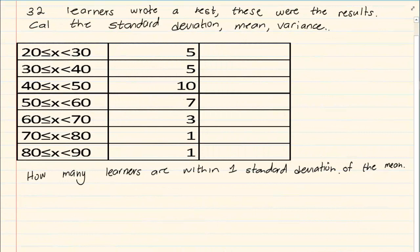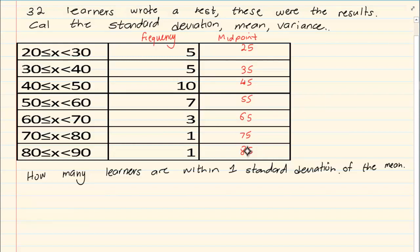Sometimes when they give you data to calculate standard deviation it can be with grouped data. What you have to do first is calculate the midpoint, because this is grouped data and they have given you a frequency. So you say 30 plus 20 divided by 2 which is 25, then 40 plus 30 divided by 2 which is 35. Continuing in tens: 45, 55, 65, 75, and 85.